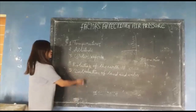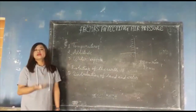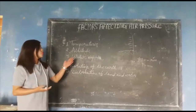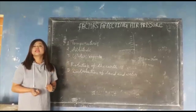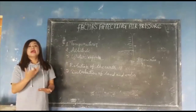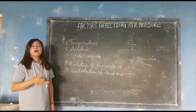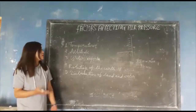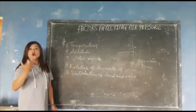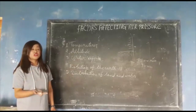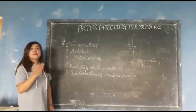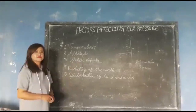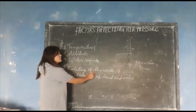The third factor is water vapor. Water vapor is lighter than dry air, because water vapor contains less nitrogen and oxygen than dry air. It means that dry air contains more nitrogen and more oxygen. Therefore, air containing water vapor would be light and would create low pressure. But dry air, being heavier than water vapor, would create high pressure.